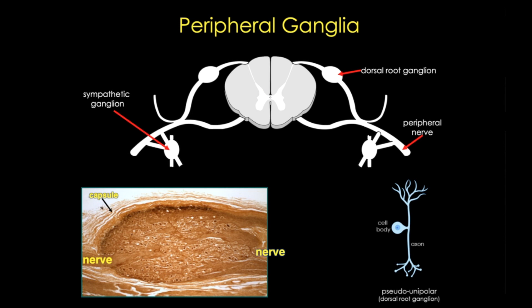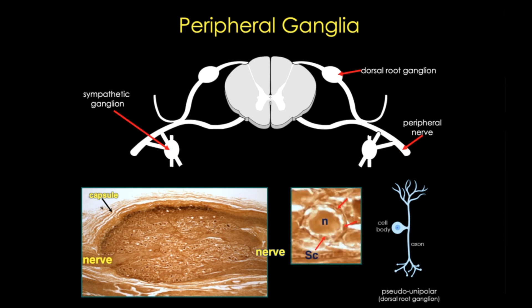Each neuron is surrounded by Schwann cells. These are sometimes called satellite cells, but don't confuse these with satellite cells in skeletal muscle, which are actually stem cells.